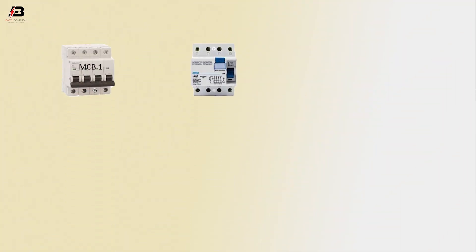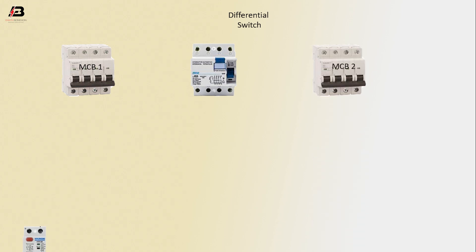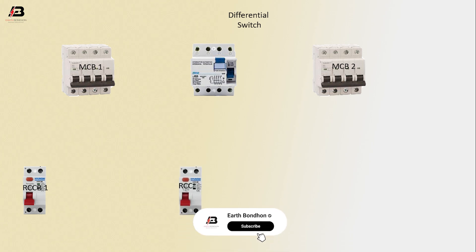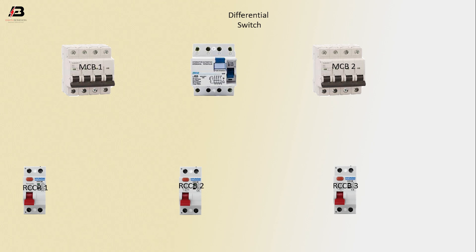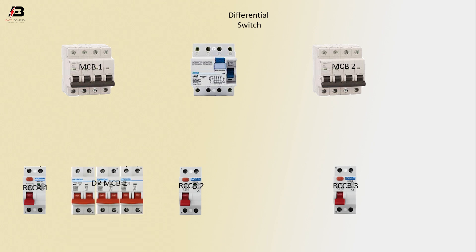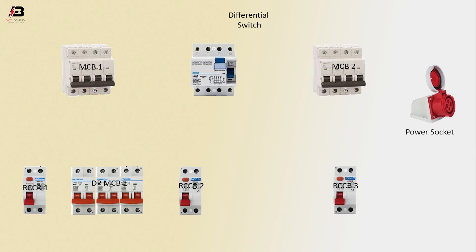So viewers, let's start. The components are: a four-pole MCB circuit breaker, a differential switch, MCB2, RCCB1, RCCB2, RCCB3, DP MCB1 for power socket, DP MCB2, and DP MCB3.